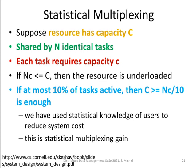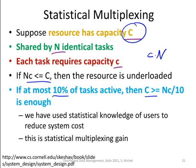We can benefit from the peaks being at different times. The idea behind this observation is statistical multiplexing. Say you have a system with capacity C shared by n identical tasks, each requiring capacity c. In principle, you need c times n capacity. But if you know that only 10% of tasks are active at any time, then it is enough if the system capacity C is larger or equal to n times c divided by 10. This gives an immense cost reduction, and is called the statistical multiplexing gain.